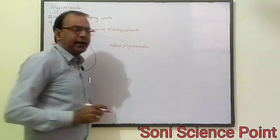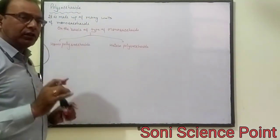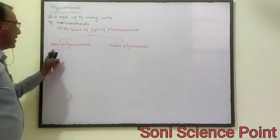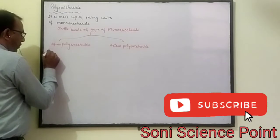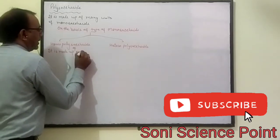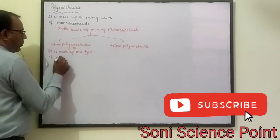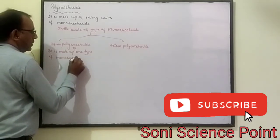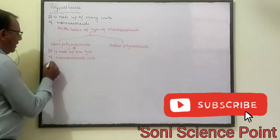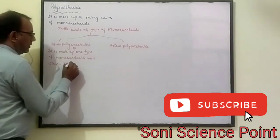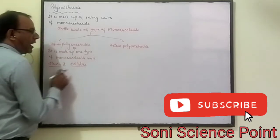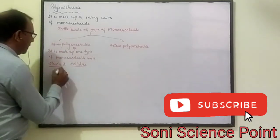If all the monosaccharide units are of a similar type — one type of monosaccharide units forming a long chain — that is called homo polysaccharide. It is made up of one type of monosaccharide units. For example, starch and cellulose; both are made up of one type of monosaccharide unit, that is glucose.